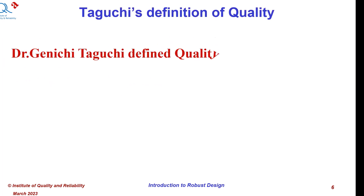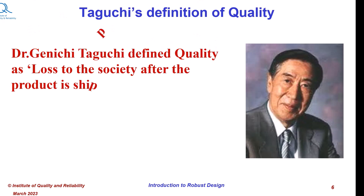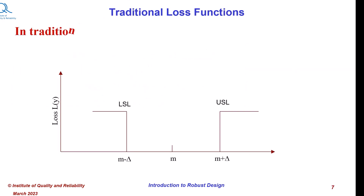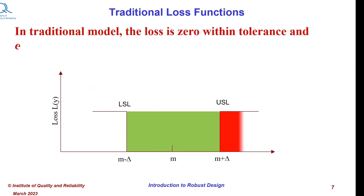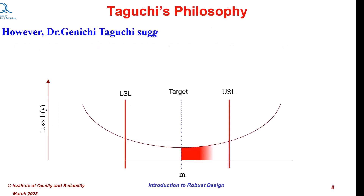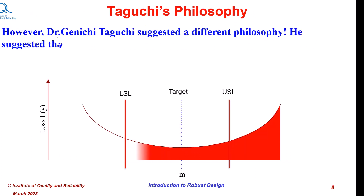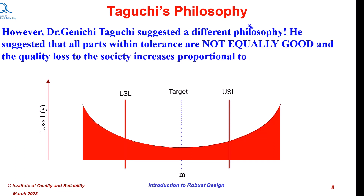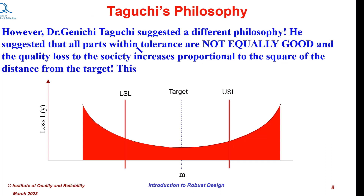Dr. Genichi Taguchi defined quality as loss to the society after the product is shipped. This is actually a negative definition of quality. In the traditional model, the loss is zero within tolerance and every part within tolerance is considered as equally good, and every part that is out of tolerance is considered as bad or defective. However, Dr. Genichi Taguchi suggested a different philosophy: all parts within tolerance are not equally good, and the quality loss to the society increases proportional to the square of the distance from the target.